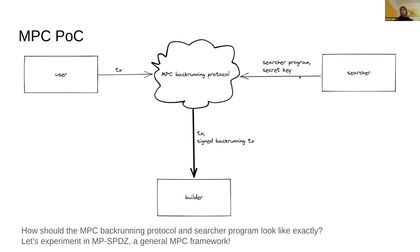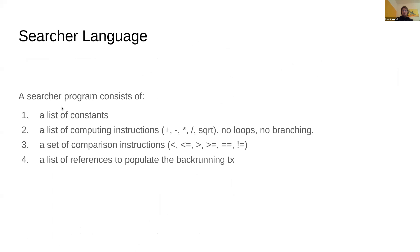We have the user input — the transaction — and the searcher inputs the program. The output is a signed back-running transaction. We just don't know yet what the back-running protocol looks like or how it works. We started experimenting in the MP-SPDZ framework, a general MPC framework, and I'm going to quickly present the current state of the proof of concept. The searcher language can be pretty simple — just a list of constants, a list of computing instructions (addition, subtraction, multiplication, maybe square root), and notably no loops and no branching. There are also comparison instructions and a list of references for populating the back-running transaction.